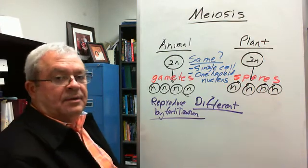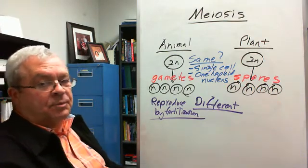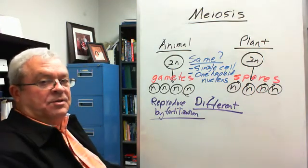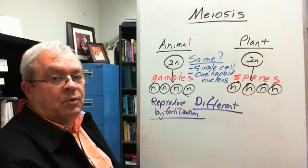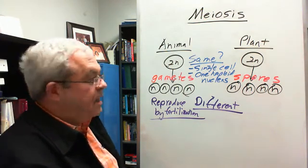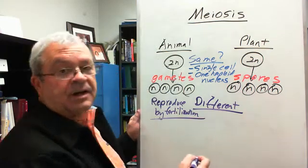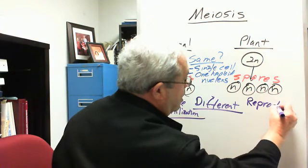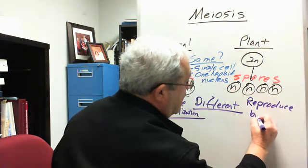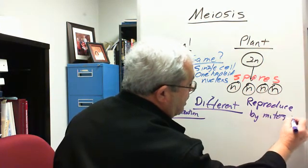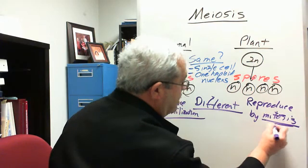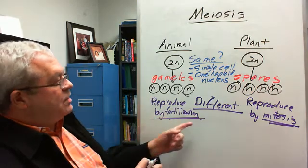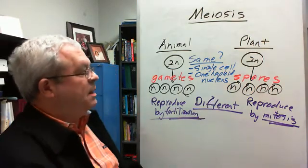How do spores reproduce? They don't do fertilization, but they reproduce. What we say is characteristic, that third characteristic of spore, it reproduces by what? By mitosis. Yes. And so, we're talking haploid mitosis here, right? These reproduce by mitosis. Yes, they do. That is the difference. That is the difference. Gametes reproduce by fertilization. Spores reproduce by mitosis.